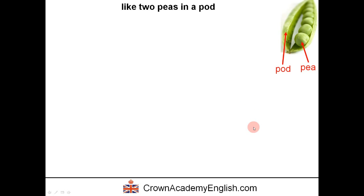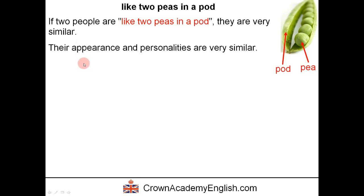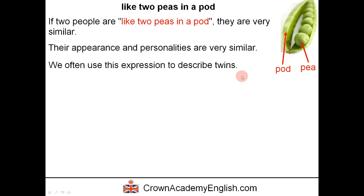The real meaning is: if two people are like two peas in a pod, it means they are very similar. Their physical appearance and personalities are very similar — they look the same. We often use this expression to describe twins, brothers and sisters, identical twins.